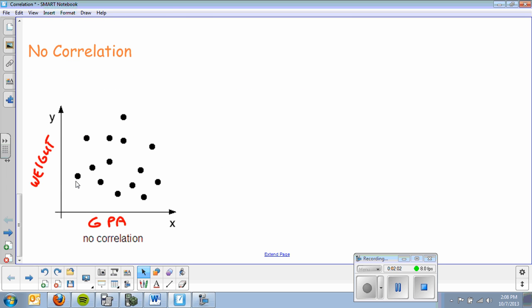The last example, we have no correlation. Here's an example of no correlation. The dots are all spread out. For example, if I plotted everybody's GPA with their weight, there's probably not much of a relationship between those two. I don't see much of a pattern. No correlation.